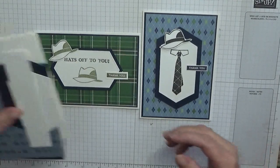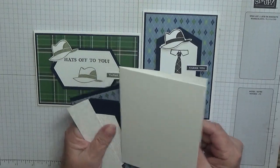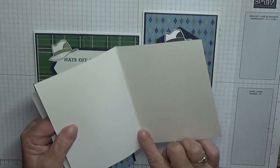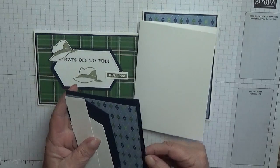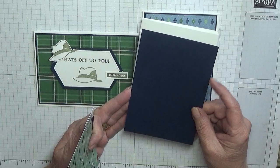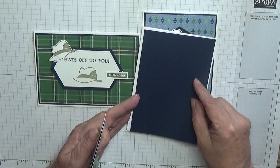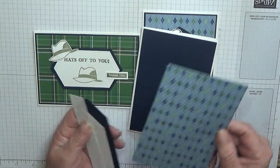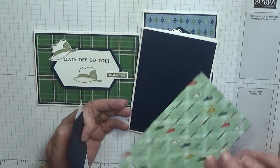For my card I have a card face of eight and a quarter by five and seven eighths scored at four and one eighth, folded in half and burnished. I have a Night of Navy card of five and five eighths by three and seven eighths. I have a piece of the Clubhouse Designer Series Paper that measures five and a half by three and three quarters.